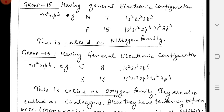Next, Group 15 has the general electronic configuration NS2 and P3. As you can see, one more electron is added to the P subshell. Elements in this group are Nitrogen and Phosphorus, with atomic numbers 7 and 15 respectively. Since the first element is Nitrogen, this group is called the Nitrogen Family.